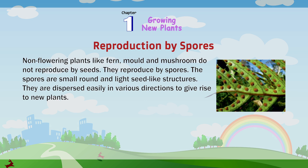Reproduction by spores. Non-flowering plants like fern, mold and mushroom do not reproduce by seeds. They reproduce by spores. The spores are small, round and light seed-like structures. They are dispersed easily in various directions to give rise to new plants.